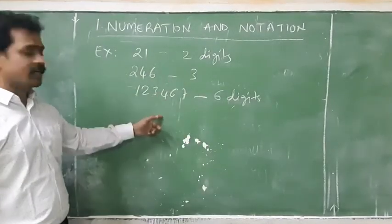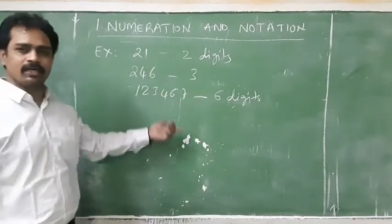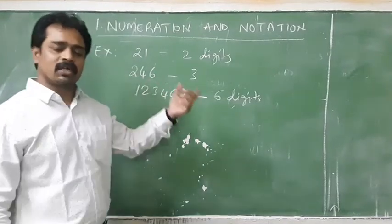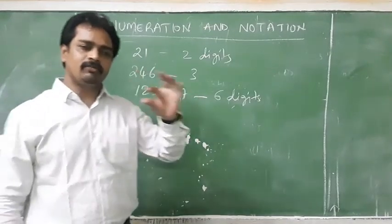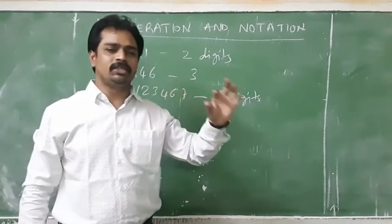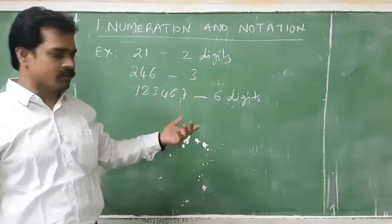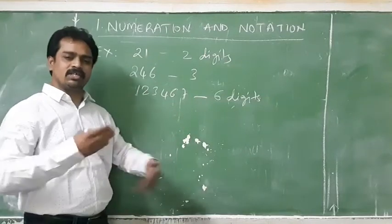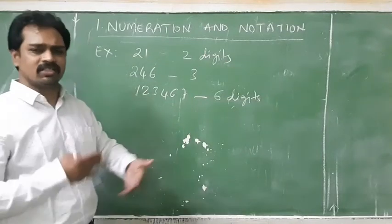In the previous class, we have done with three digits, four digits, five digit numbers. And here, more than five digits — six digits, seven digits.